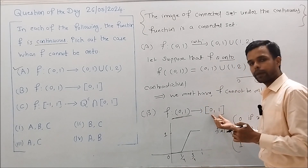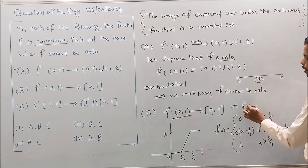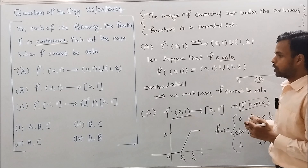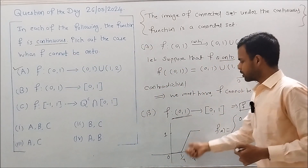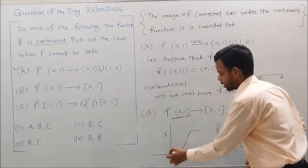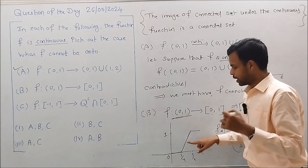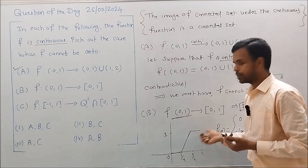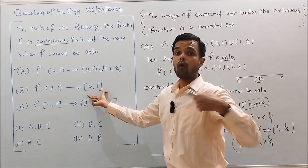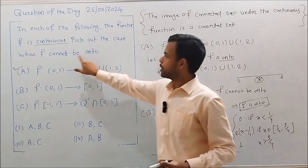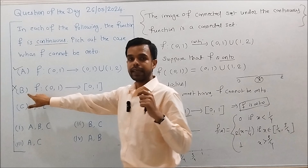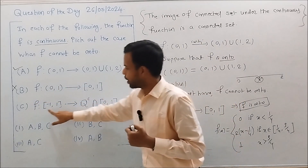For this mapping, the range equals the codomain [0,1], which implies this mapping f is onto. This mapping is also continuous because the graph is a continuous curve — I have drawn it without lifting the pen, so there is no break. Hence there exists a continuous onto function from (0,1) to [0,1], so in Case B the statement 'f cannot be onto' does not hold. Option B is incorrect.